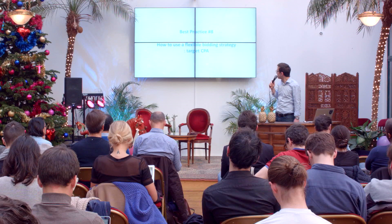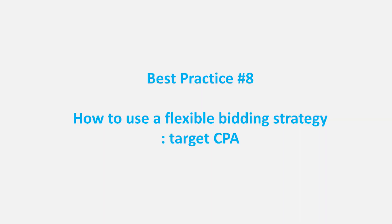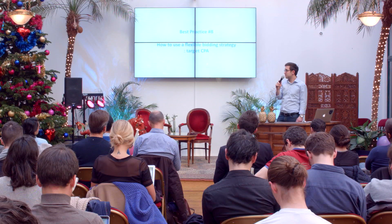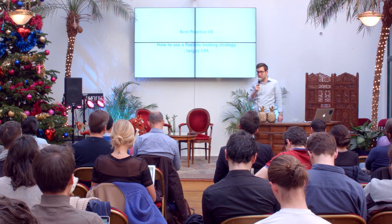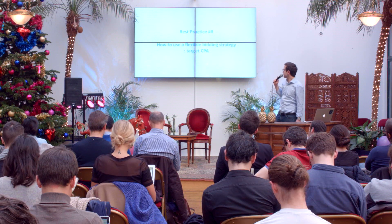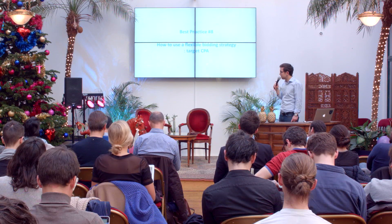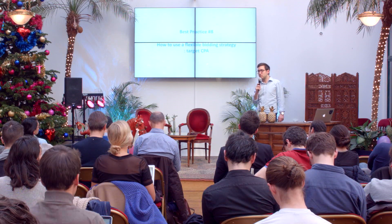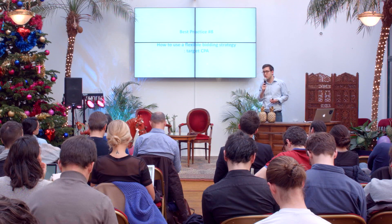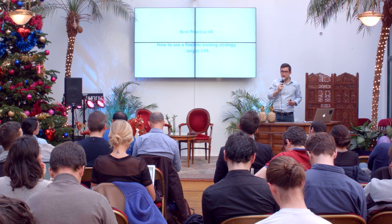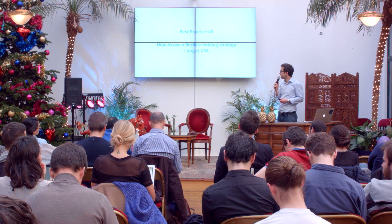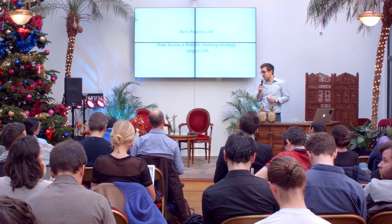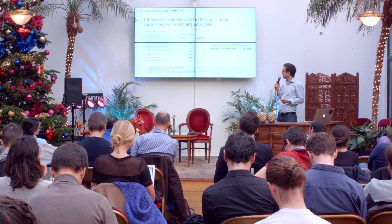After mobile, I'm going to talk about some flexible bidding strategies. These strategies may not apply to your specific account, but they can be very useful if you start to scale your AdWords account. We use something called target CPA a lot. Basically, you set a target cost per acquisition and AdWords will take care of the bidding process — you won't have to set individual bids for every keyword. You just set a target and AdWords will try to match it.